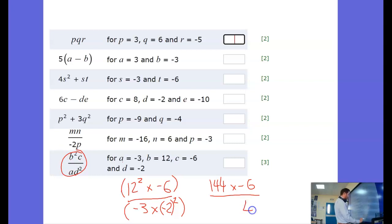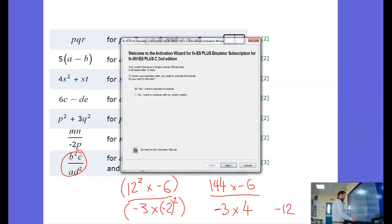So I've got minus 3 times positive 4. So on the bottom there I've got negative 12 and on the top there 144, let's do it with a calculator, let's cheat.